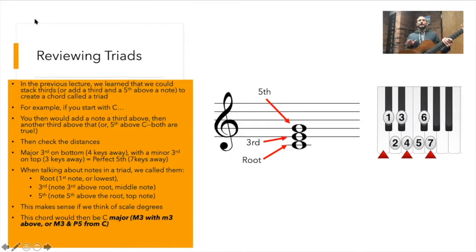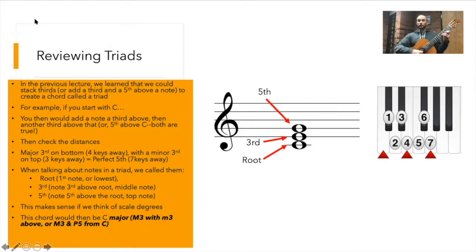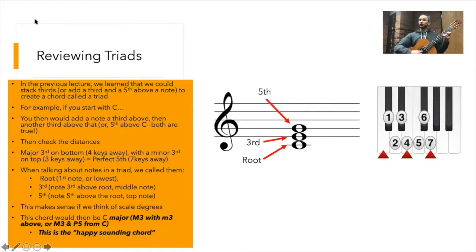It should be noted that a major chord always has this pattern: a major third on the bottom with a minor third on top of it, or also thought of as a major third and a fifth — root, third, fifth. Also should be noted: this is the happy chord.